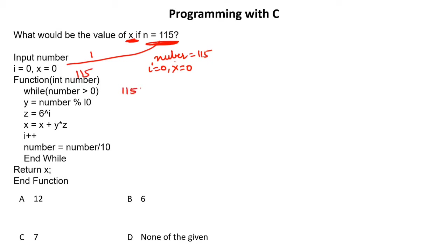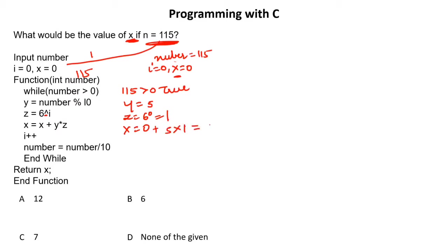While number is greater than 0 — is 115 greater than 0? Yes, true. y will have number modulo 10: 115 modulo 10 gives 5, so y becomes 5. z is 6 to the power i — i is 0, so z is 6 to the power 0 which equals 1. x = x + y * z = 0 + 5 * 1 = 5. i increments to 1.